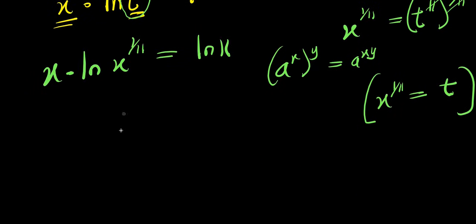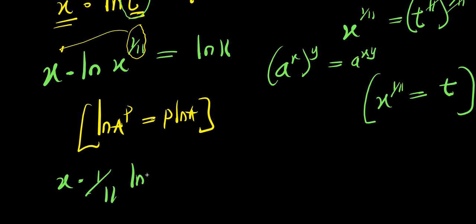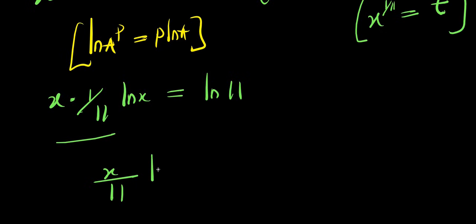Now applying the same identity again — ln a power b equals b times ln a — the 1 over 11 comes out front, and I have x times 1 over 11 times ln x equals ln 11, which simplifies to x over 11 times ln x equals ln 11.